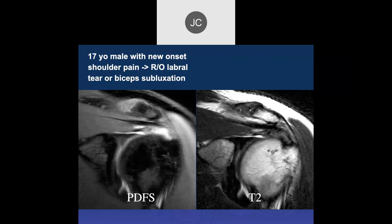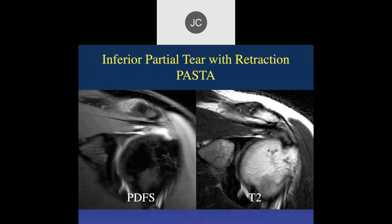Looking at the supraspinatus: on PD fat-sat there's a lot of signal in the distal tendon. On T2, I'm seeing tendon fibers going all the way to the footplate — no defect. Maybe a little mixed signal on the articular surface. I'd say tendinosis. But the musculotendinous junction should be right around the 12 o'clock position — and in the inferior part, the musculotendinous junction is way back here. So this is a partial tear.